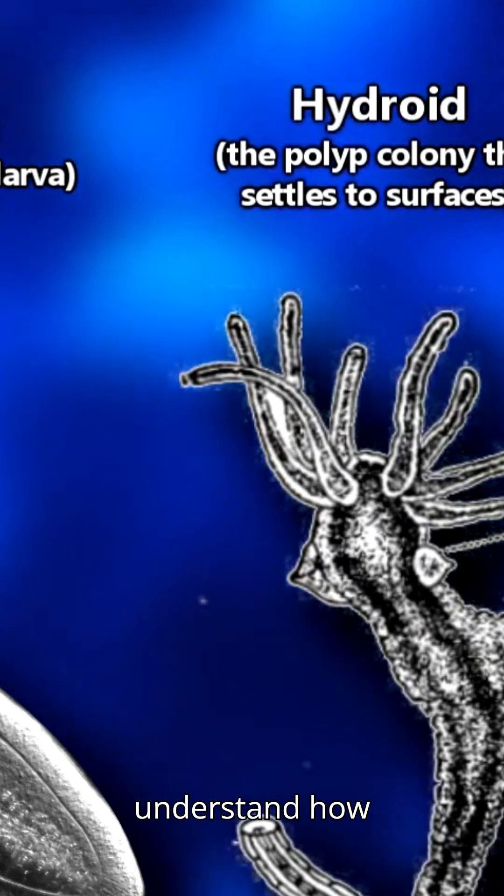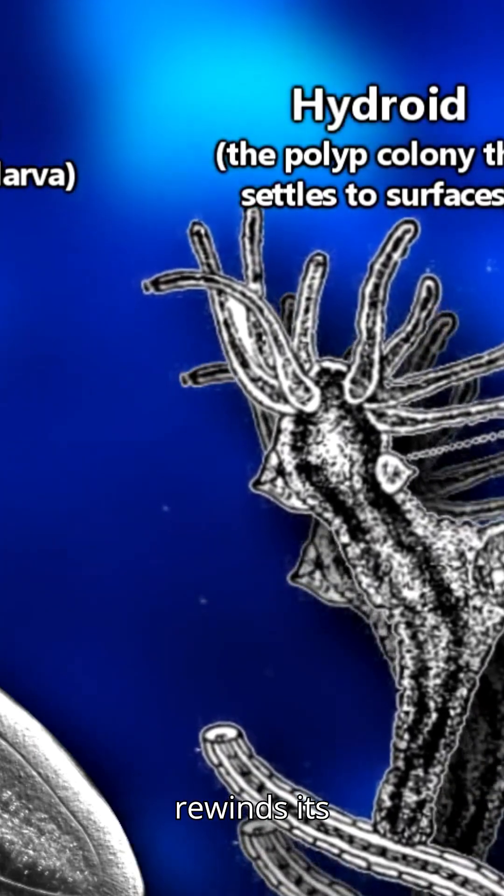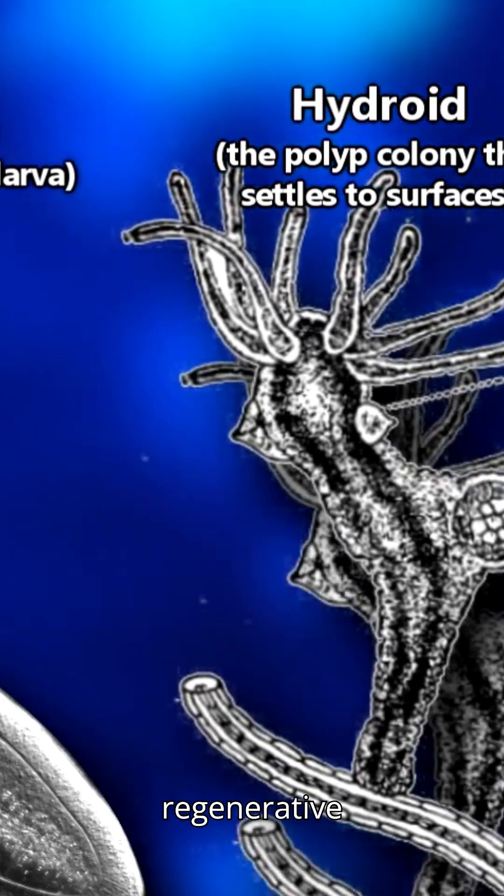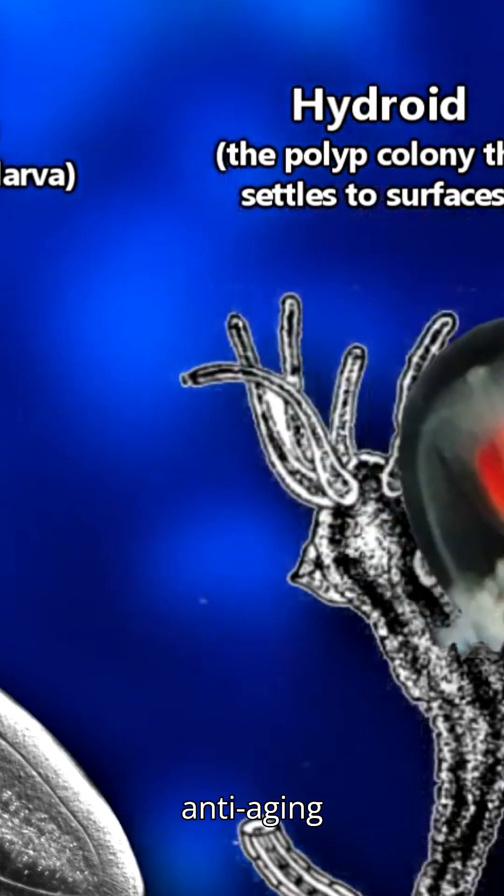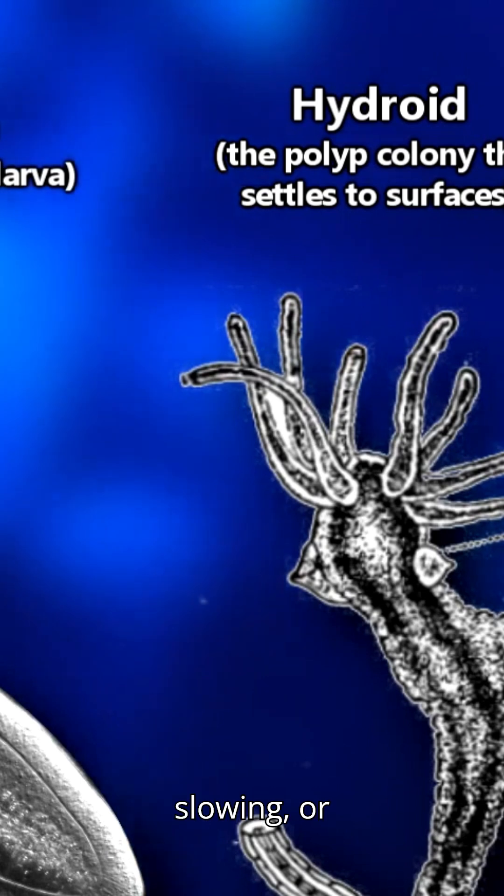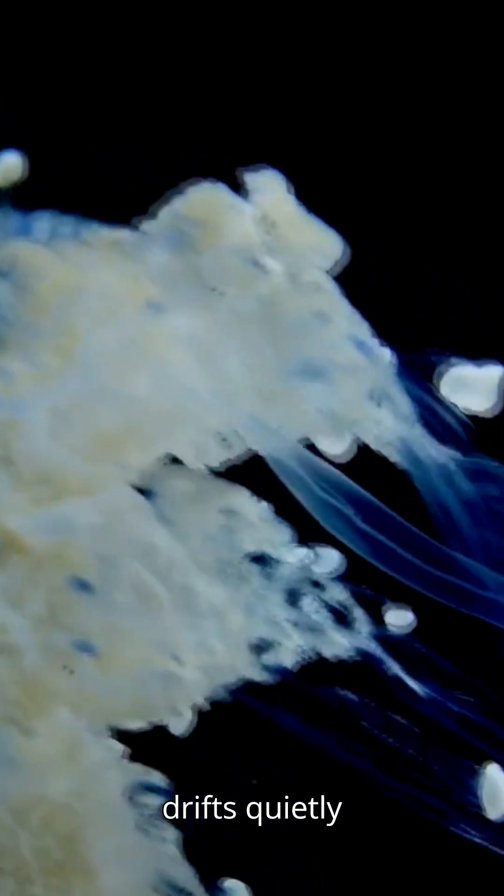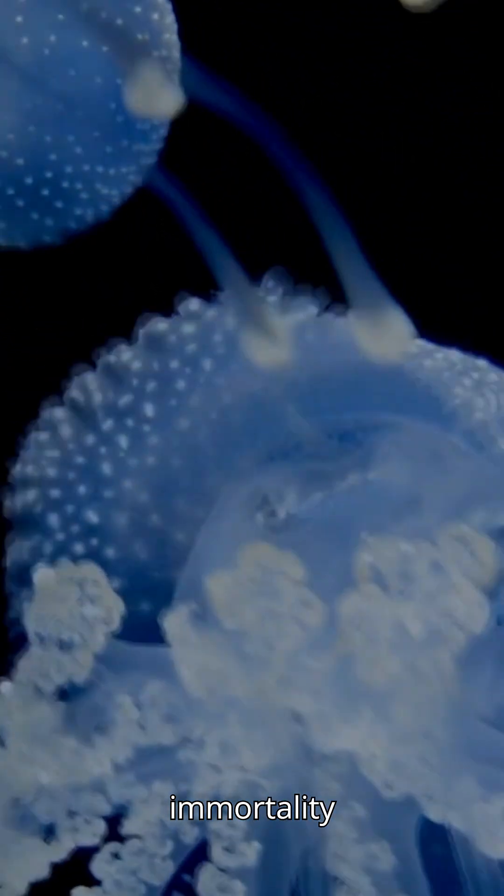If we can understand how this little jellyfish rewinds its body, it could revolutionize regenerative medicine and anti-aging research. Imagine slowing or even reversing the human aging process. So while the immortal jellyfish drifts quietly in the oceans, it might just be carrying the secret to unlocking immortality for us.